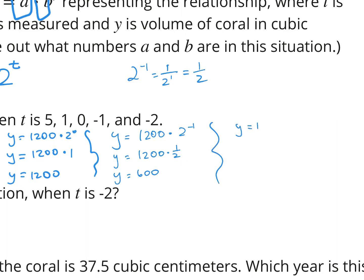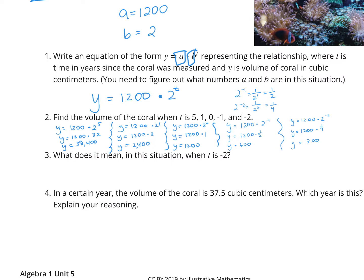For t equals negative 2: 1,200 times 2 to the negative 2 power. Since 2 to the negative 2 is 1 over 2 squared, which is 1/4, we take a quarter of 1,200, which is 300. For question 3 — what does it mean when T is negative 2? When we talk about negatives, we're talking about prior to the measurement. If the initial measurement is when they found the 1,200 cubic centimeters of coral, negative 2 would represent 2 years before they took the measurement.